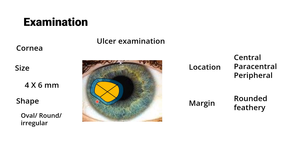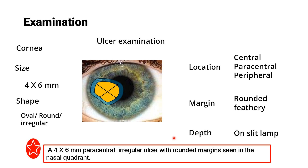Describe the margin — rounded margins are usually seen in bacterial ulcers, feathery margins in fungal ulcers. Depth cannot be reliably commented upon on torchlight examination and requires slit lamp. So you would present: 'a four by six millimeter paracentral irregular corneal ulcer with rounded margin seen in the nasal quadrant.'